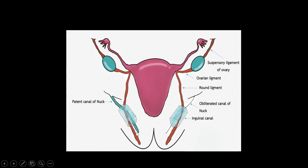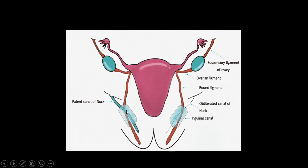The processus vaginalis appears in the first trimester of gestation. It is an invagination of the parietal peritoneum that enters the deep inguinal ring before the gubernaculum. In the inguinal canal, it lies medial to the gubernaculum. In males, it is associated with testicular descent, whereas in females, the Canal of Nuck refers to the section of the processus vaginalis located in the inguinal canal.